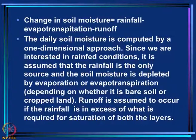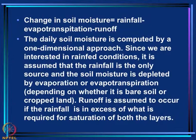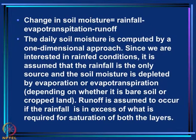We look at the change in soil moisture in both layers. This is a simple water balance approach: change in soil moisture equals rainfall (the input of water) minus evapotranspiration. Evaporation occurs from bare surfaces; evapotranspiration includes plant transpiration. Change in soil moisture depends on how much rain occurred and how much got evaporated. There is also runoff. If we can calculate all of these, we can calculate the change in soil moisture.